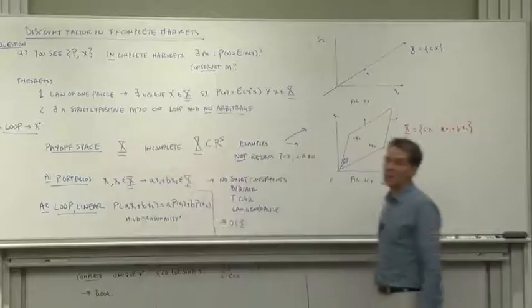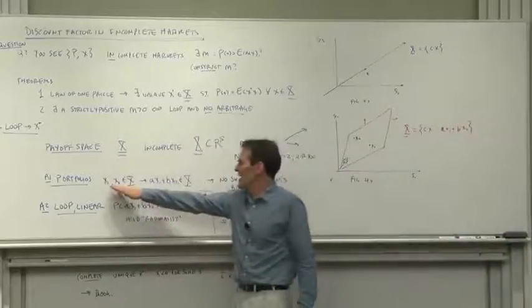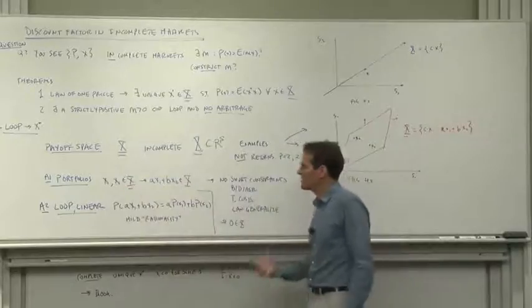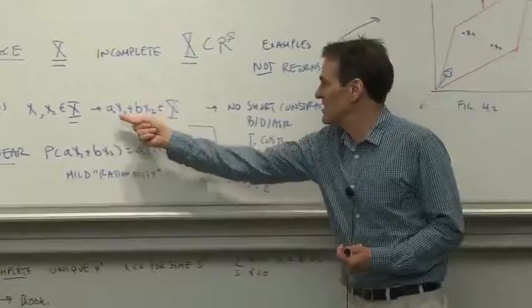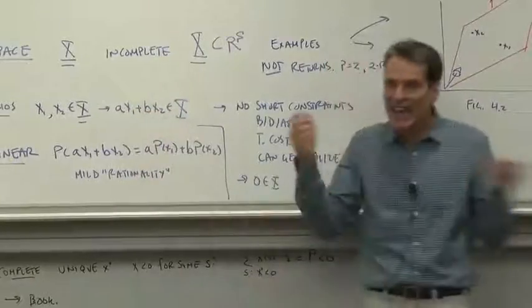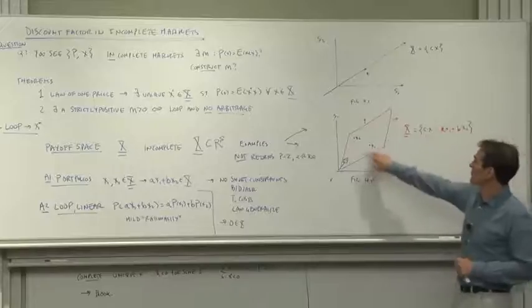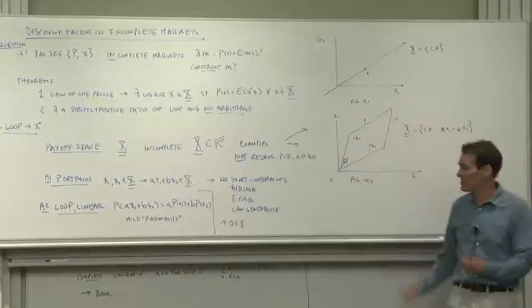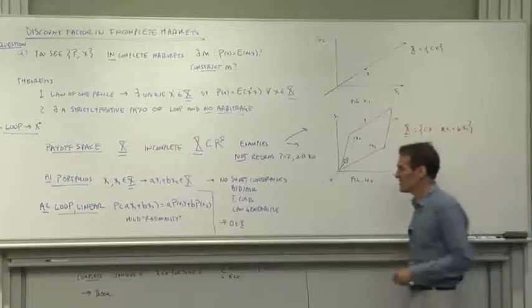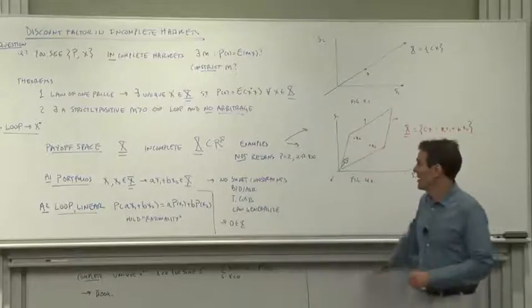There's a payoff space which is limited. We're going to make two assumptions about that payoff space. First, that investors can make any portfolio. In other words, if x1 and x2 are traded, then the investors can also access any portfolio of x1 and x2, including short positions. That's why I've drawn the payoff space as the hyperplanes here extending from x1 and x2, not x1 and x2 themselves. That's an important assumption, and it's totally false in reality.